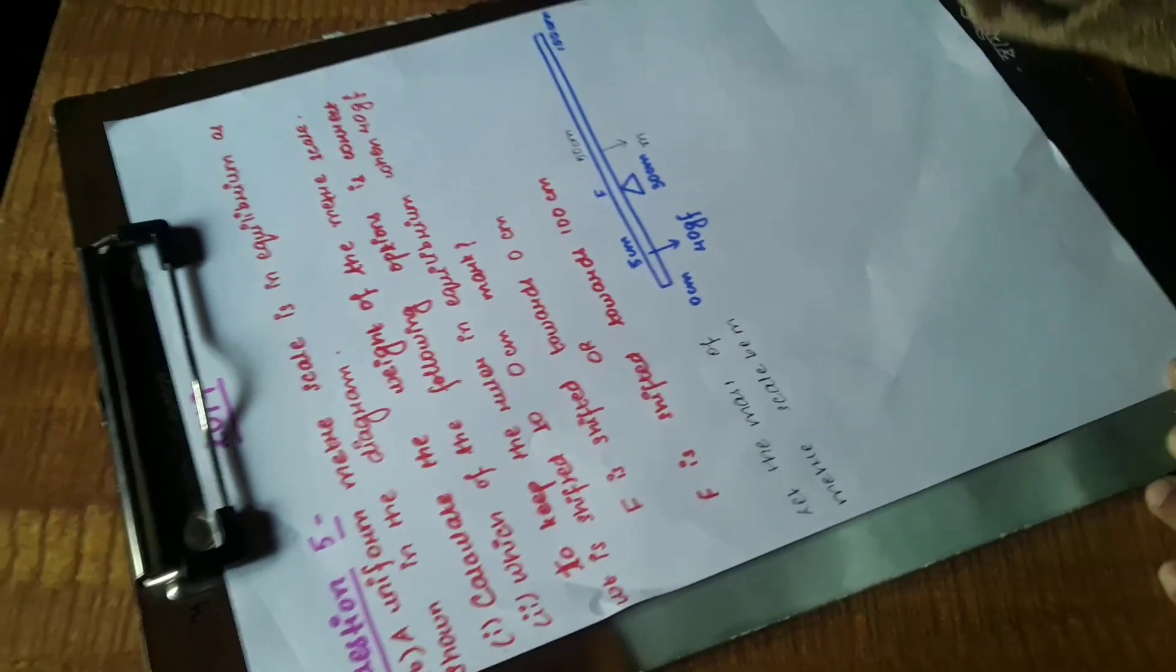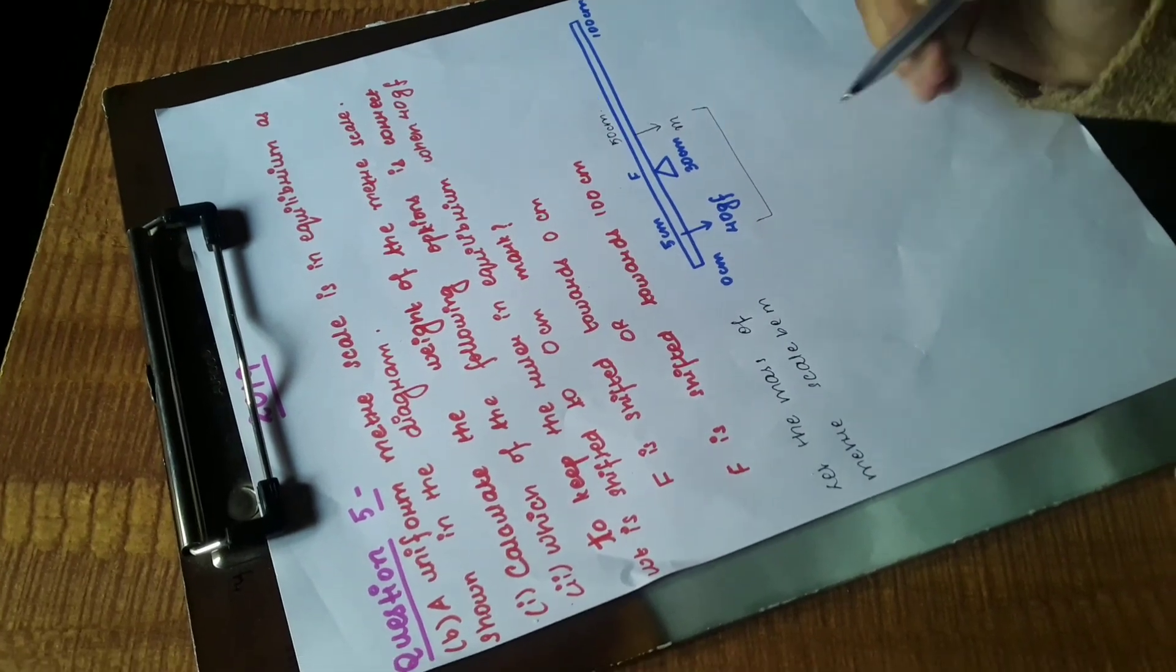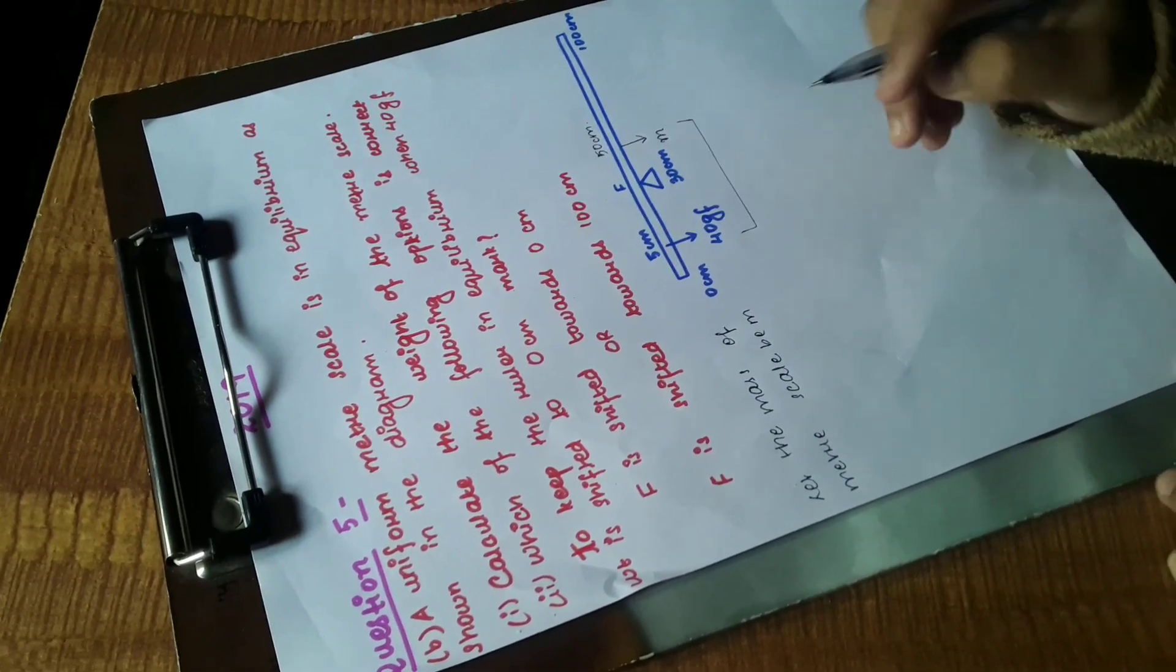We only have to consider that portion of the scale. All the other things will just vanish. You have to imagine that there is no other part of the scale. So this is our system now, and we are only going to calculate based on this system.